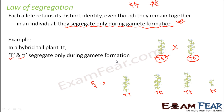Mendel gave these two laws based on his experiments on monohybrid cross: the law of dominance — one trait dominates over the other — and the law of segregation — alleles segregate during gamete formation. These were the first laws in genetics. However, later other scientists did further research and found that Mendel's laws were not incorrect but incomplete. There were scenarios where blending between alleles was found, and segregation was only partially correct — all things we will explore as we go ahead.